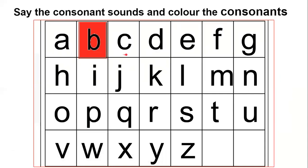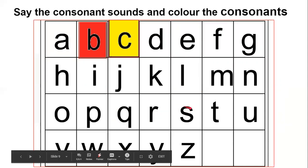Now next letter is C. So what is the sound of C? Kuh. So we will say the sound of the letter C is kuh and we will color it. So like this, we will see for consonants and color them and you have to send me this worksheet.